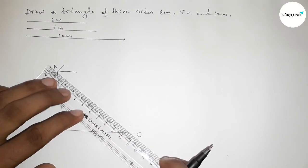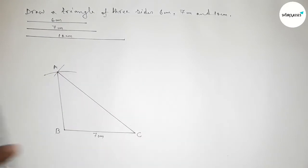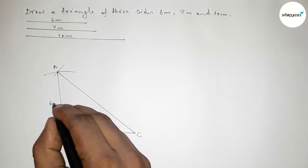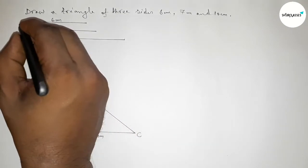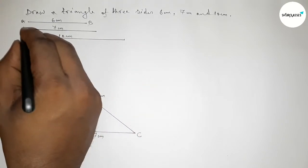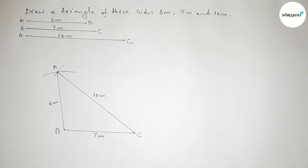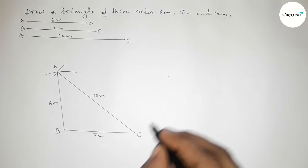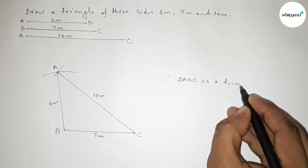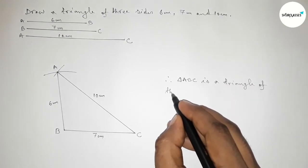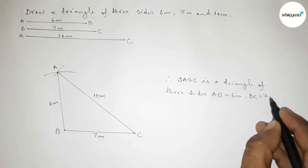Now joining A and B to get line AB, then joining A and C to get line AC. The length AB equals to 6 centimeter and the length AC equals to 10 centimeter. So we have AB line, BC line, and AC line, giving us triangle ABC — a triangle with three sides.